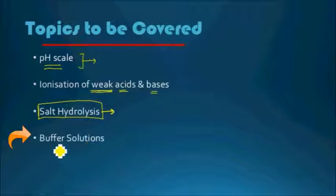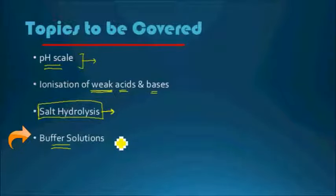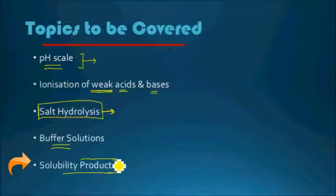Then we will look at buffer solutions. If you have already heard of this in practical examinations, you know that buffer solutions are solutions which are able to maintain their pH to some extent. We will look at how that happens in detail. The last topic of the ionic equilibrium chapter will be solubility product — essentially a study of salts again; the types not covered in salt hydrolysis will be covered here.